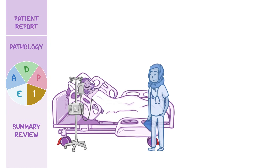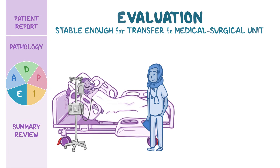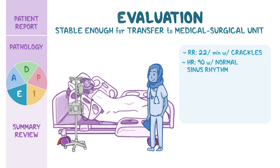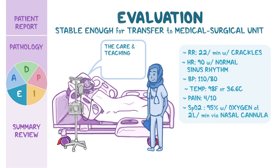Toward the end of your shift, you evaluate Ms. Gutierrez for transfer to the medical-surgical unit. Her vital signs are: respiratory rate 22 per minute with crackles still audible, heart rate 90 with normal sinus rhythm, blood pressure 110 over 80, temperature 98°F (36.6°C), pain 4 out of 10, and SpO2 95% with oxygen at 2 liters per minute via nasal cannula. She tells you the care and teaching you provided has made her much less anxious about how to care for herself when discharged home.